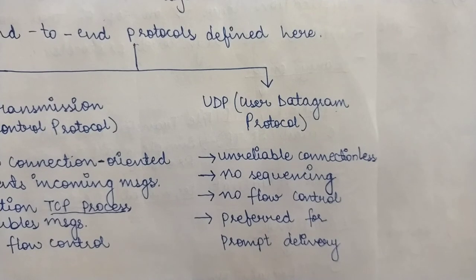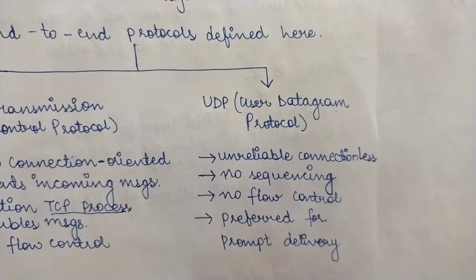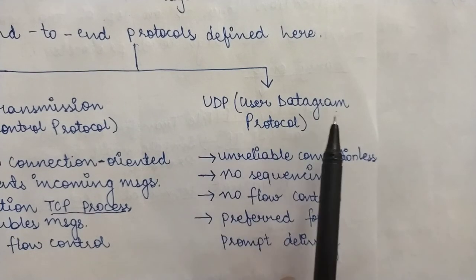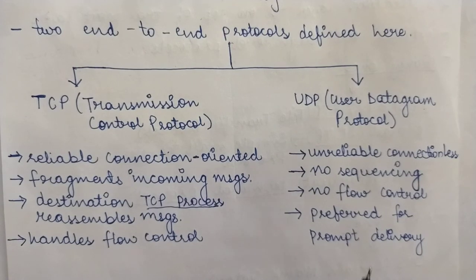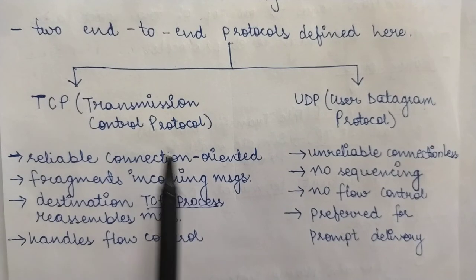A few pixels here and there won't matter in real-time applications, but on-time delivery is really important — if you're talking, the other person should hear it right now, not a minute later. For real-time data such as audio and video, where reliability is less important but on-time delivery is critical, you use UDP. For situations where reliable and accurate delivery is very important — like file transfer — you use TCP.